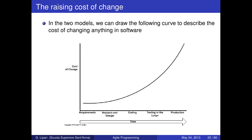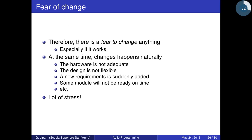In both models we consider the so-called cost of change over time. At the beginning, changing something in the requirements costs very little — almost nothing. Doing a change during design costs a little more. Making a change during coding costs much more because you have to go back and check if your design still meets the new requirements. If you make a change during testing, you have to go back to design and coding. And if you want to change something in production, that's the most costly.